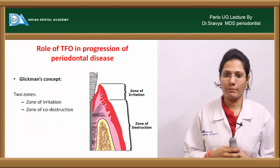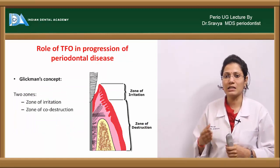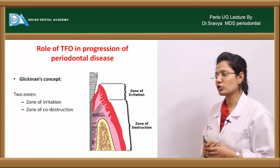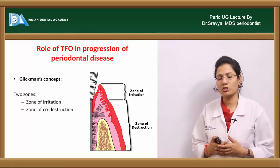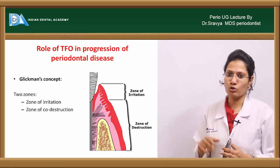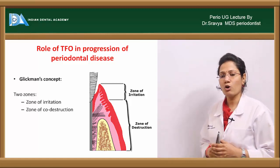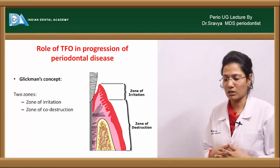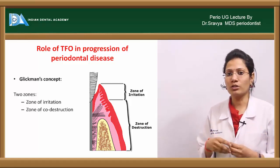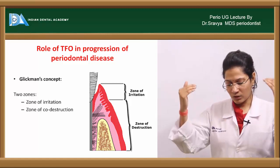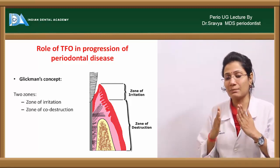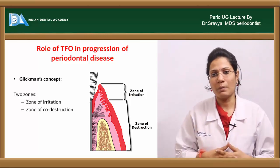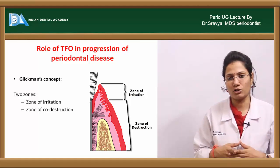Regarding the role of trauma from occlusion in the progression of periodontitis, two concepts have been put forward: Glickman's concept and Weyhock's concept. According to Glickman's concept of co-destruction, there are two zones: a zone of irritation and a zone of co-destruction. He says it is not purely trauma from occlusion that causes periodontal disease, but it can be combined with plaque accumulation. When trauma from occlusion is a major cause, the forces go directly into the periodontal ligament and then to the alveolar bone, causing resorption.